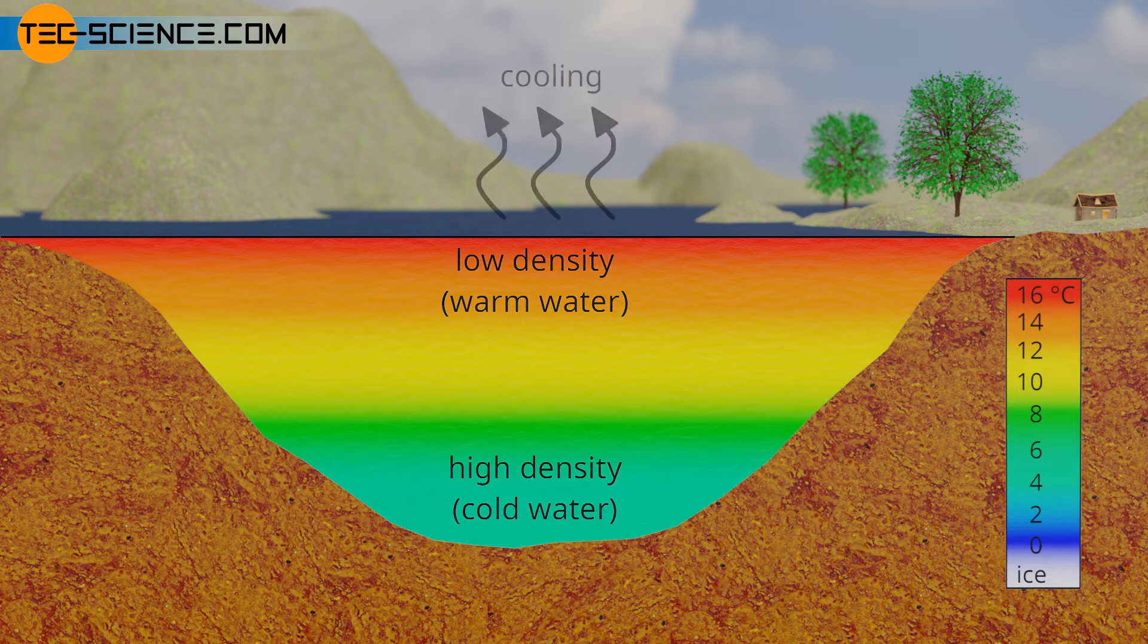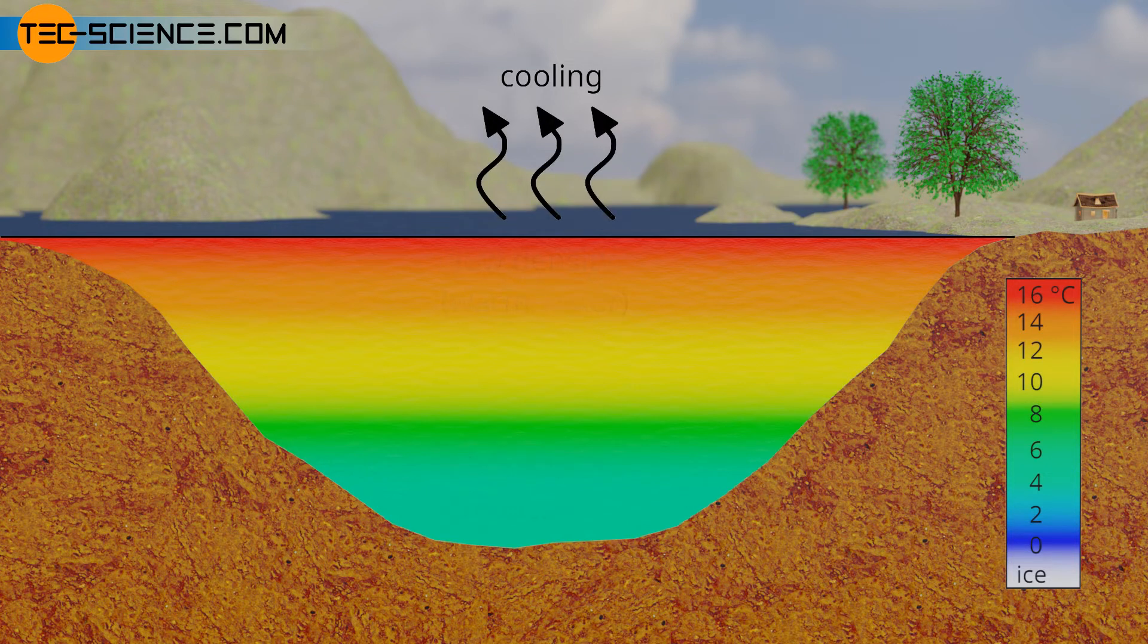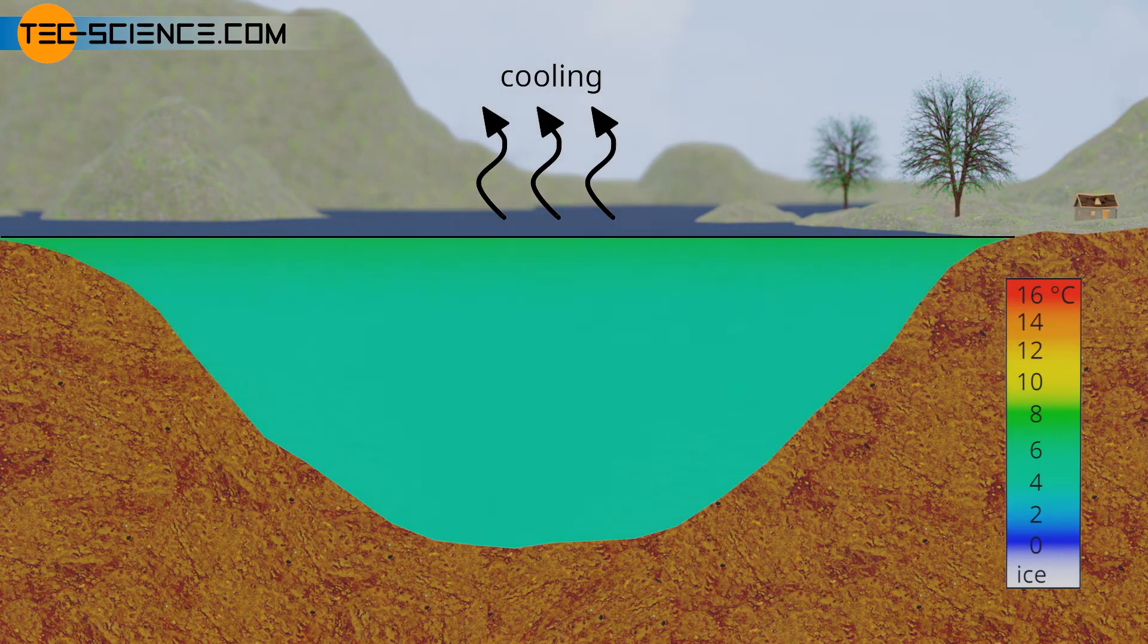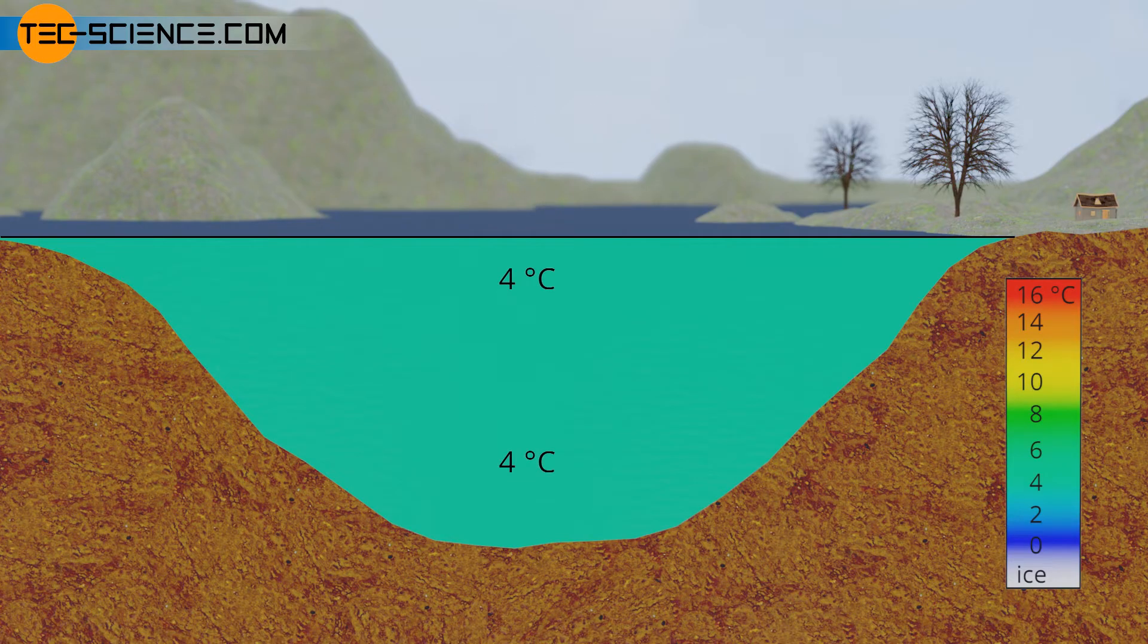In autumn the water will cool down gradually. The temperature of the relatively warm surface layer will drop accordingly. Thus, the temperature difference between bottom layer and surface layer will become smaller and smaller. The temperatures of the different water layers will equalize more and more. Sooner or later, a uniform temperature of 4 degrees Celsius will be reached throughout the entire water. This will also be the case if the water has warmed up to 5 degrees Celsius in summer, for example.